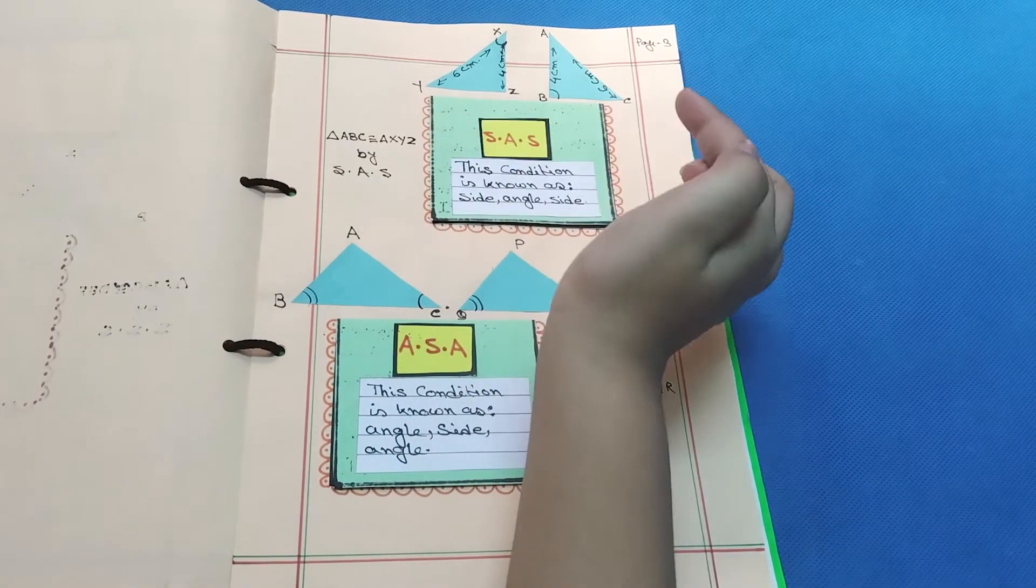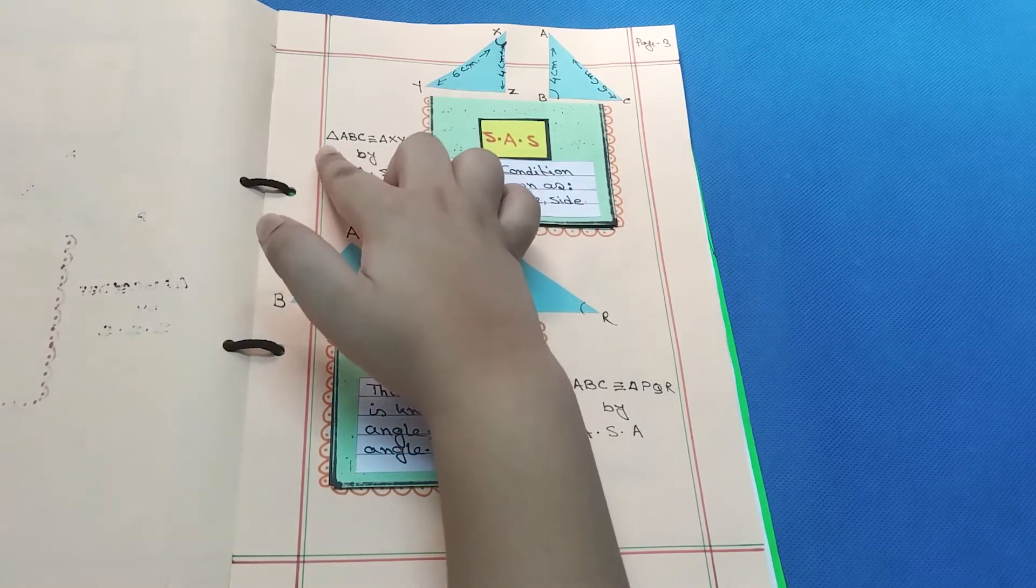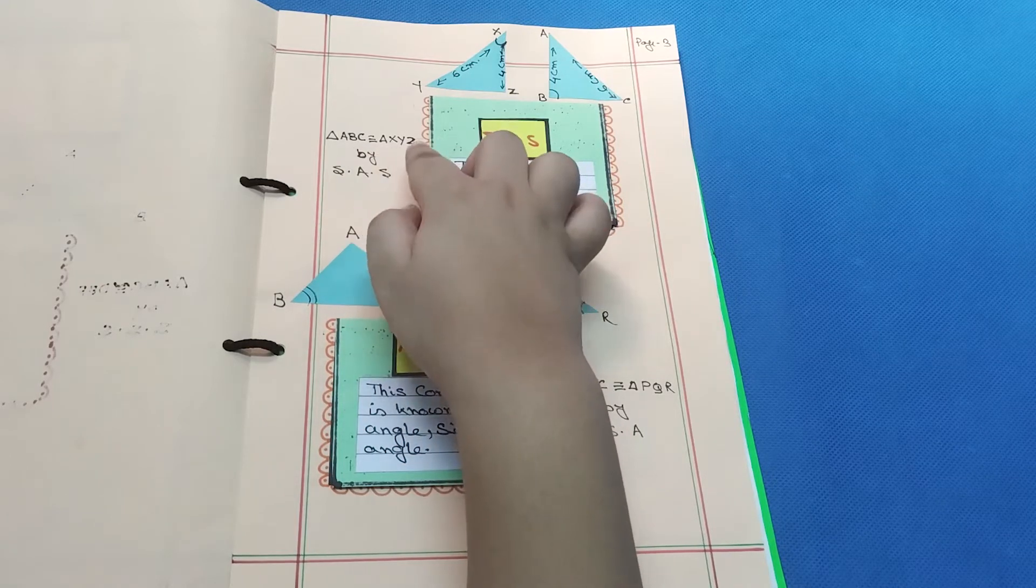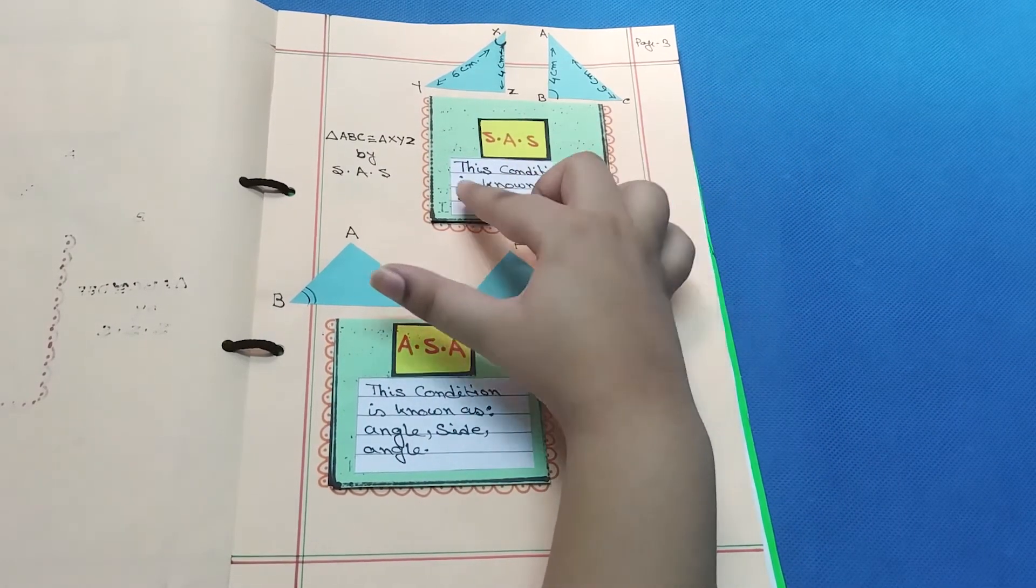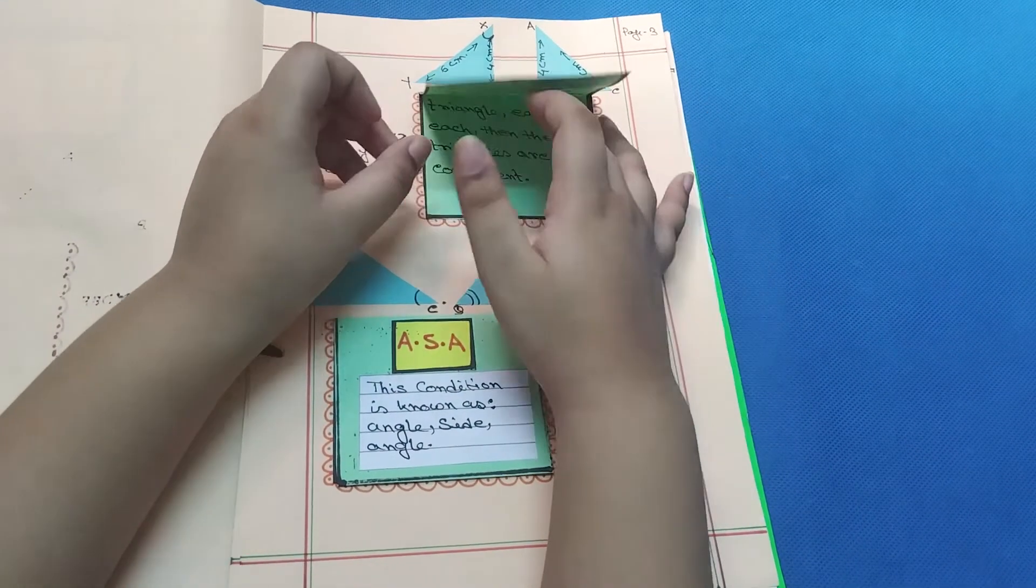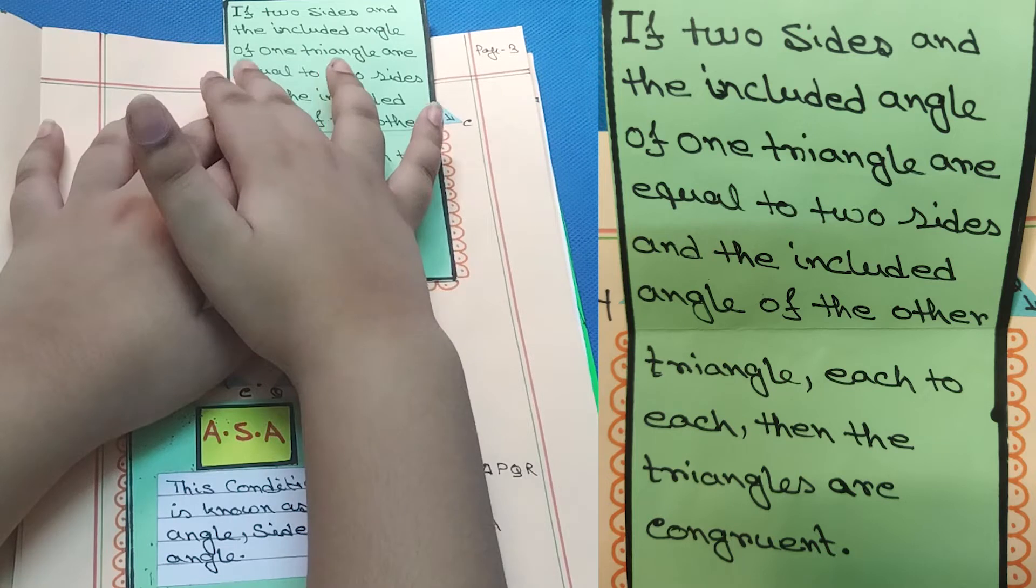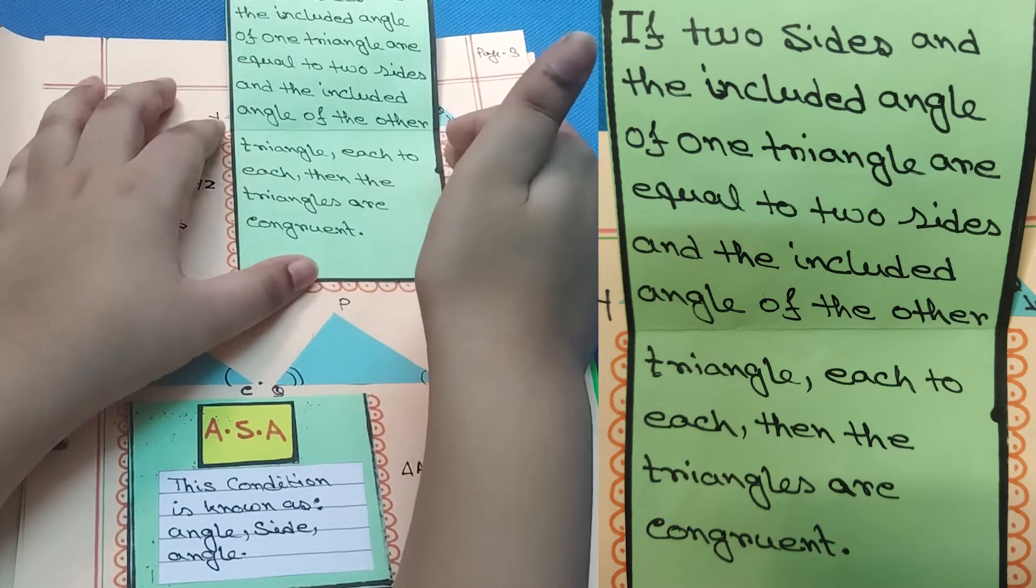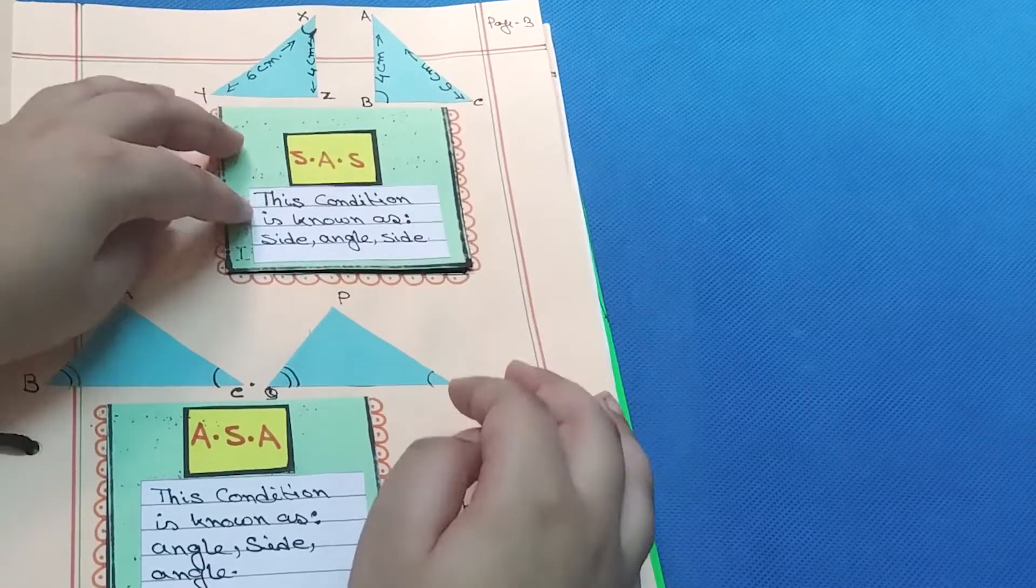Next page. I've drawn a figure here and there's something written: triangle ABC equals triangle XYZ by SAS. SAS means this condition is known as Side-Angle-Side. If two sides and the included angle of one triangle are equal to two sides and the included angle of the other triangle, each to each, then the triangles are congruent.